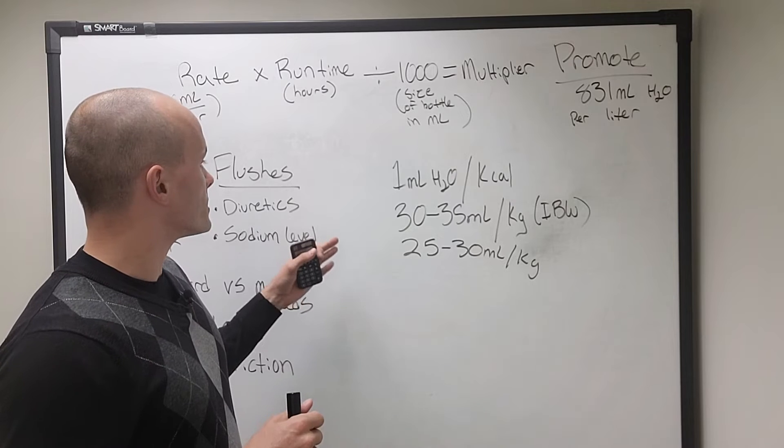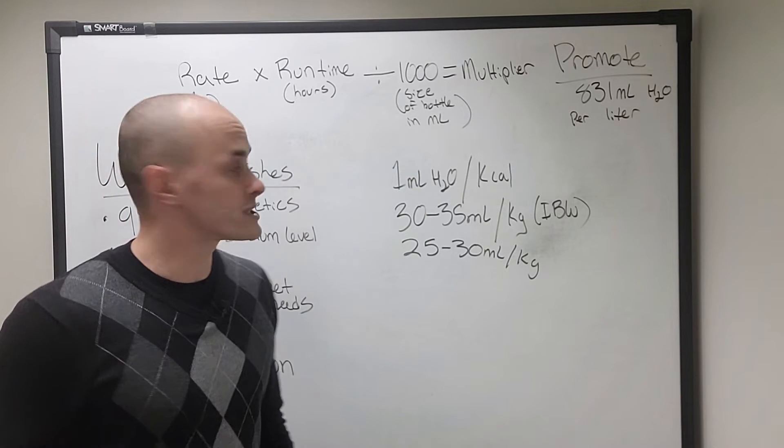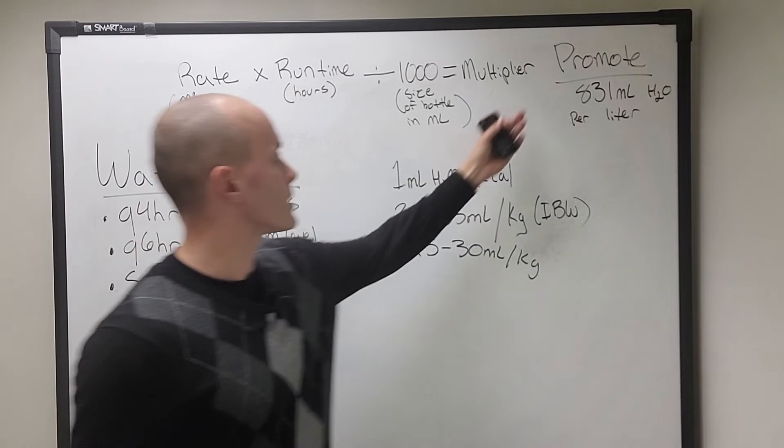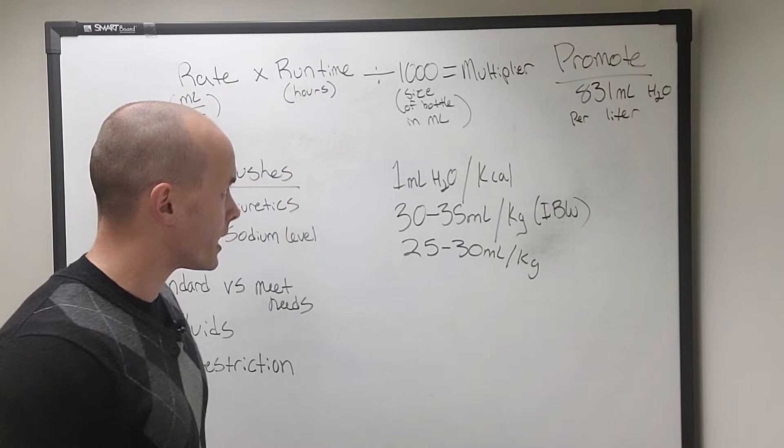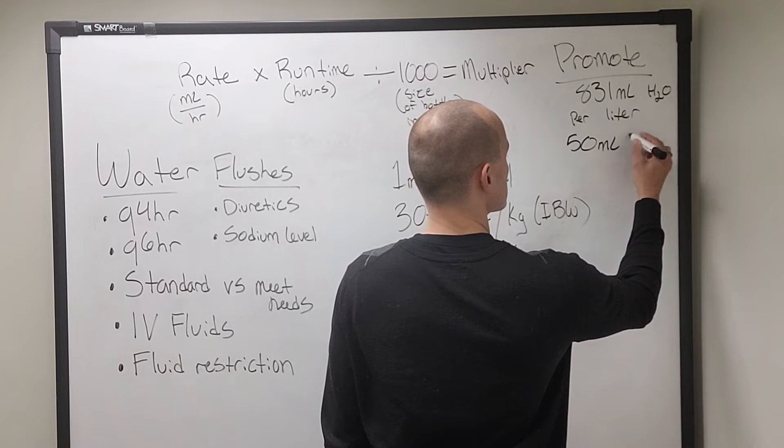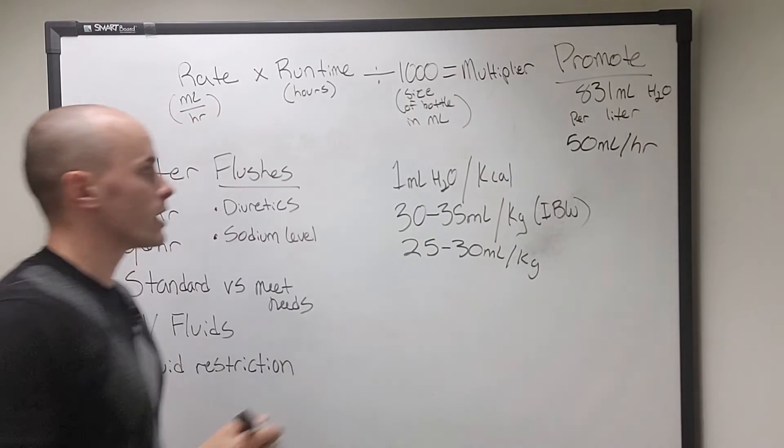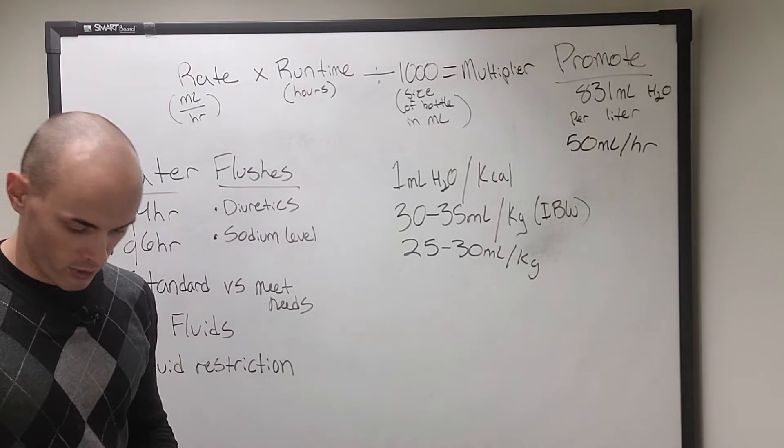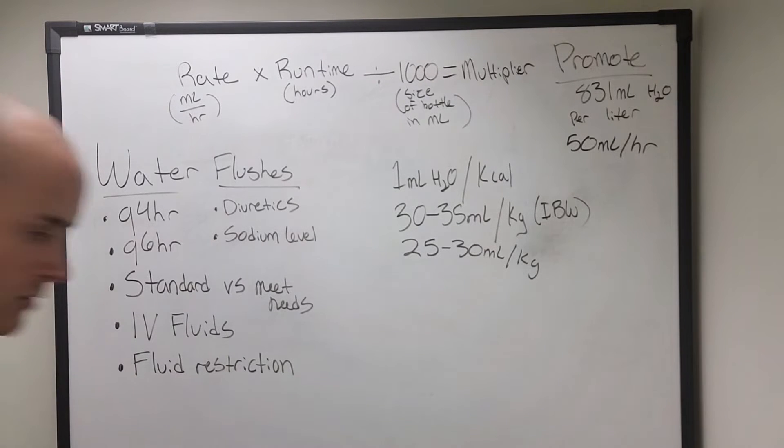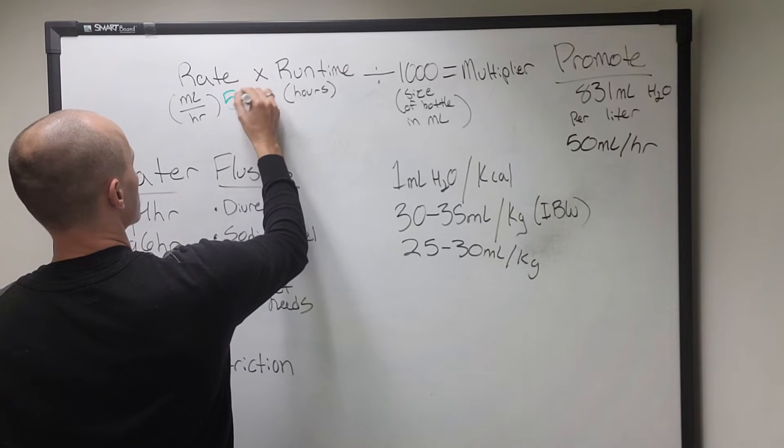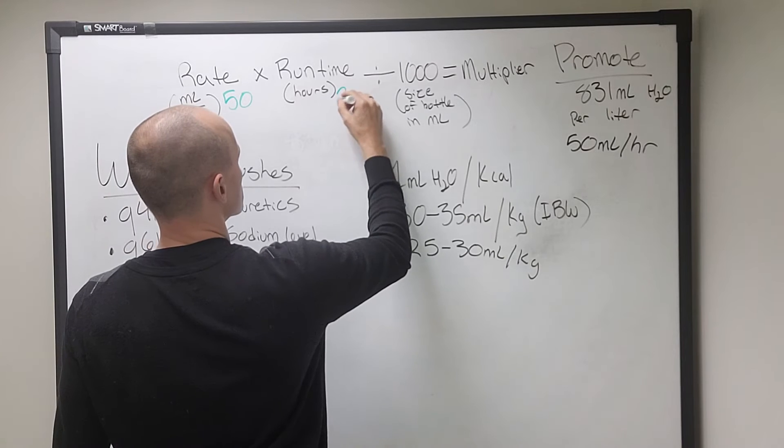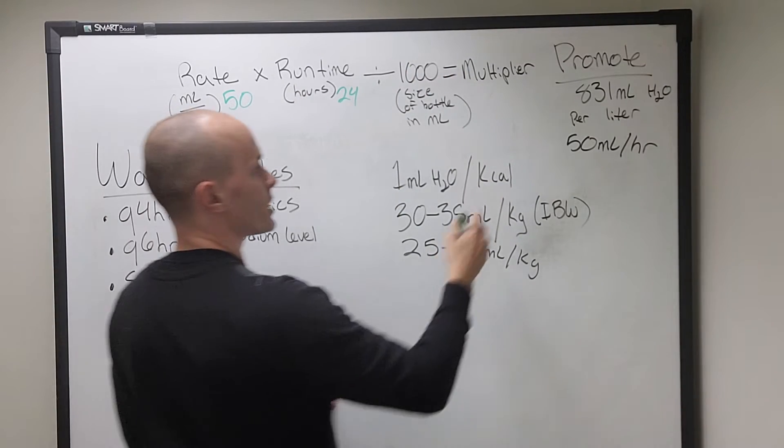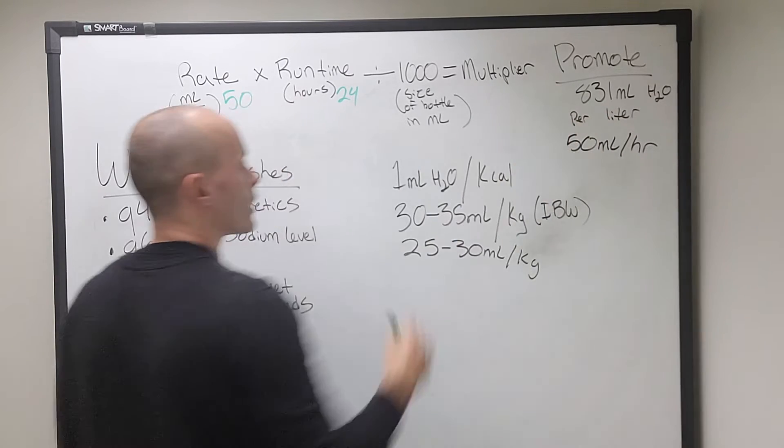Now in terms of figuring out what flushes to give them, what you do is you run your math through this equation. So let's say that we have promote with fiber here and we're gonna run it at 50 milliliters per hour. So how much water does that formula give our patient? So we use this equation, our rate is 50. Let's say this promote is running at 50 an hour and we're gonna do a continuous rate of 24 hours per day and our bottle size here is a thousand mils.